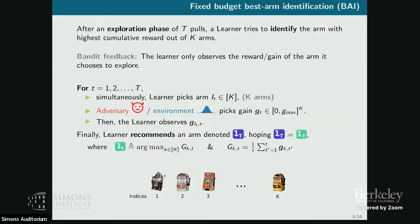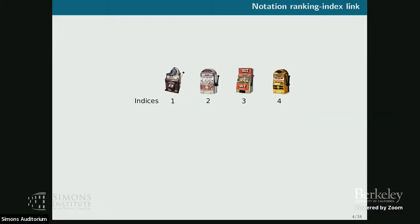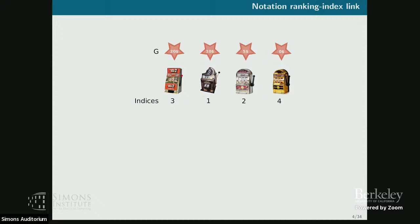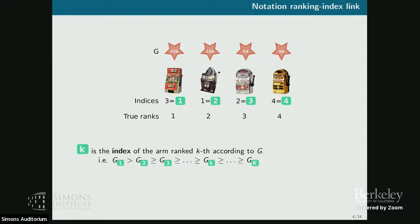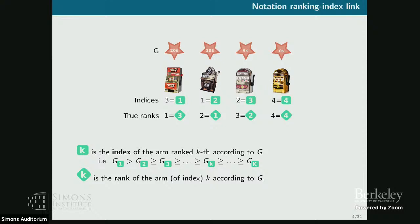The ground-truth best arm is the one that, in hindsight, has accumulated the most cumulative reward G_k_T. I'm introducing a simple notation about ranking: given four arms with cumulative rewards, we sort them from best to worst. For example, index 3 is ranked first. Given a rank k, the notation tells you which arm is ranked k according to the ground-truth reward; conversely, given an arm, you can retrieve its rank. The same notation in a different color represents the learner's estimated rankings.